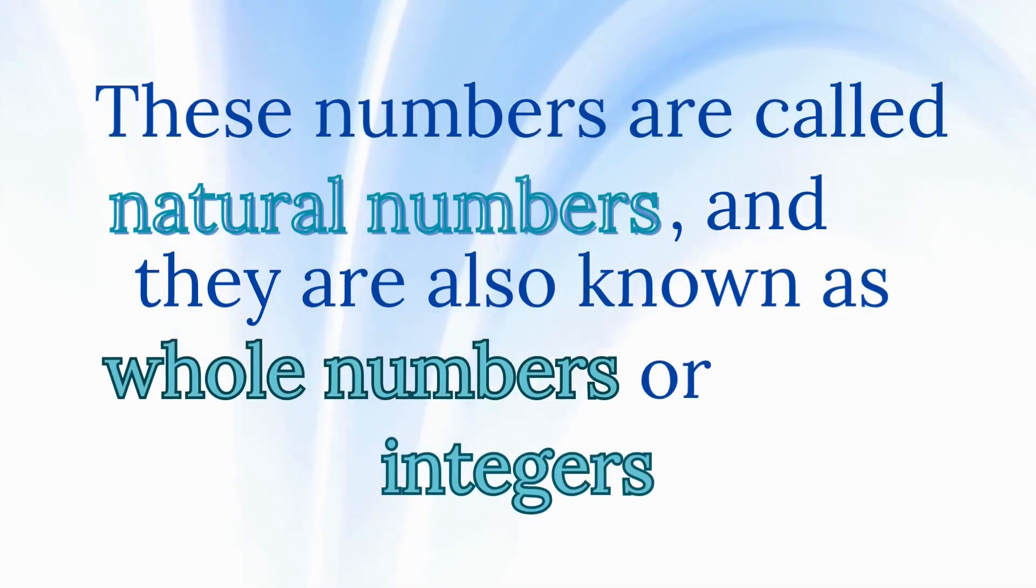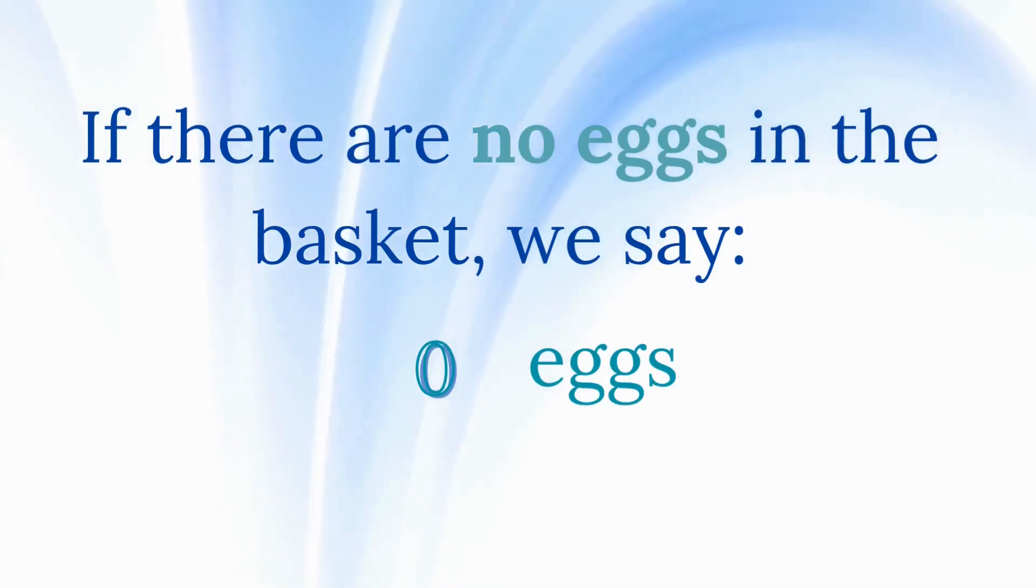These numbers are called natural numbers, and they are also known as whole numbers or integers. If there are no eggs in the basket, we say 0 eggs.